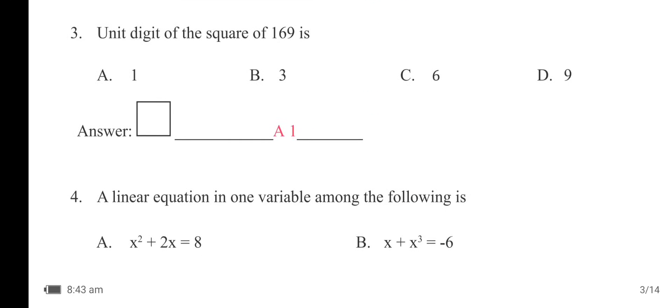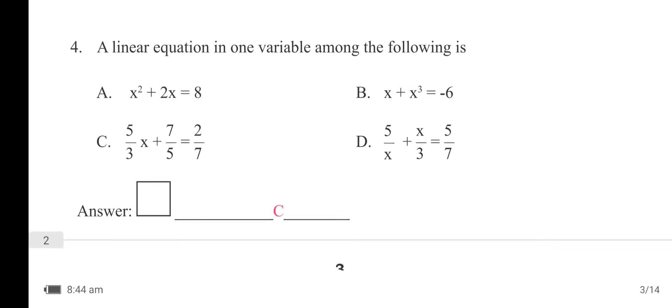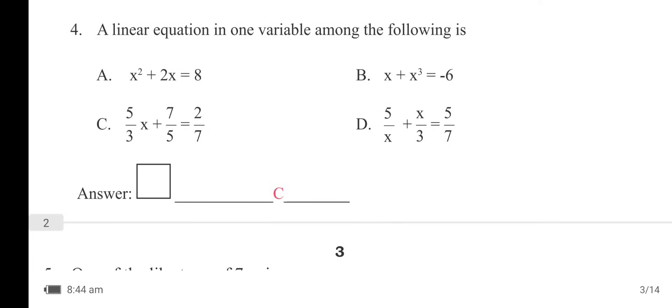The unit digit of the square of 169 is 1, so option A is the right answer. A linear equation in one variable among the following is option C, which is 5/3 x + 7/5 = 2/7.